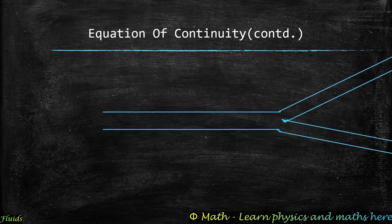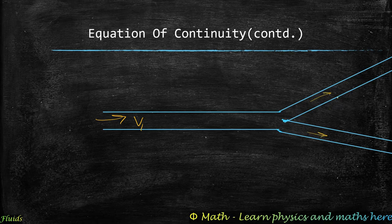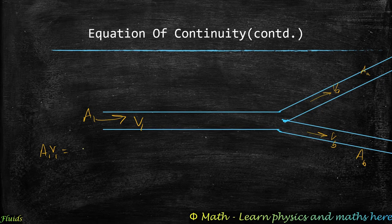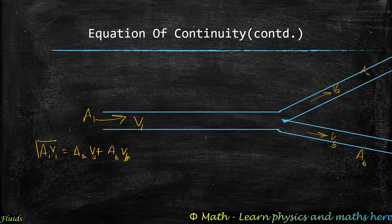Before Bernoulli's equation, here is an advanced concept for the equation of continuity. If a flow divides into two branches with areas Aa and Ab and velocities va and vb, then A1 v1 = Aa va + Ab vb. This extension is useful in many competitive problems.